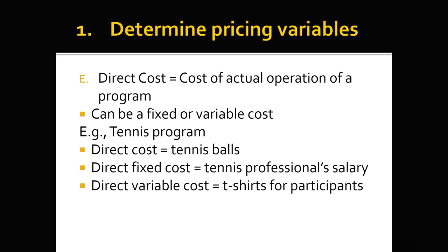Then there are direct costs — the cost of the actual operation of a program. These can be fixed or variable. Using the tennis program example: a direct cost is tennis balls — you cannot run the program without them, and it's a program cost, not a facility cost. You also have direct fixed costs, such as the tennis professional's salary — it doesn't matter how many people are in the program, you have to pay for that. And direct variable costs, like t-shirts, which depend on the number of participants.